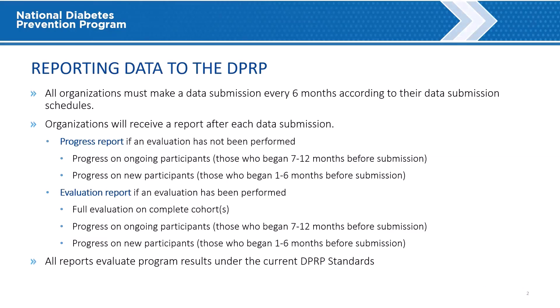Reporting Data to the DPRP. All CDC-recognized organizations must make a data submission every six months to maintain recognition. Data submission schedules are set according to the date the organization's application for CDC recognition is approved. Organizations will receive either a progress report or an evaluation report after each data submission. A progress report is generated when there are no participants who have concluded their participation in the Lifestyle Change Program and are eligible for evaluation. If there are participants who have concluded their participation and are eligible for an evaluation, then the organization will receive an evaluation report.